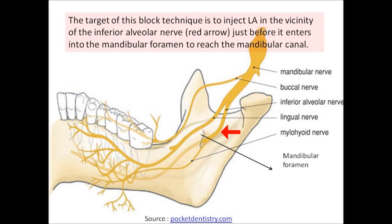The target of this block technique is to inject local anesthetic in the vicinity of the inferior alveolar nerve just before it enters into the mandibular foramen to reach the mandibular canal.